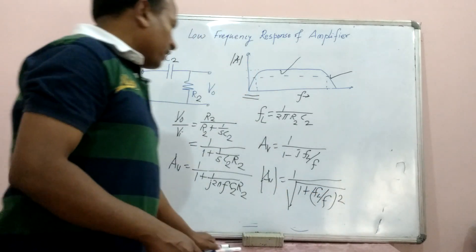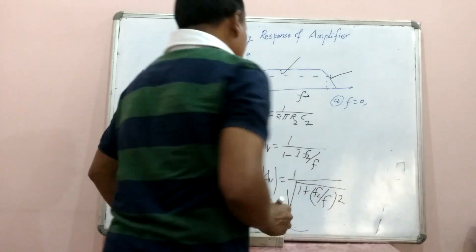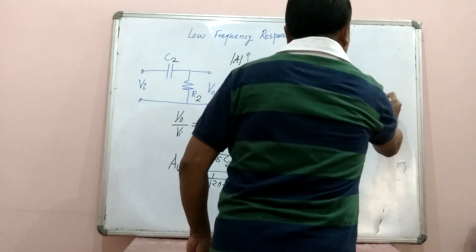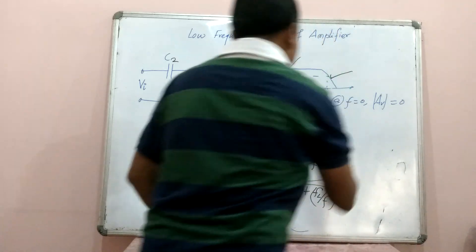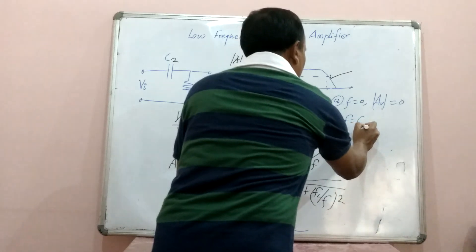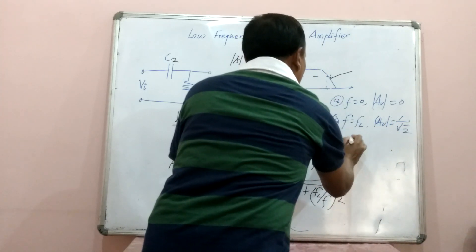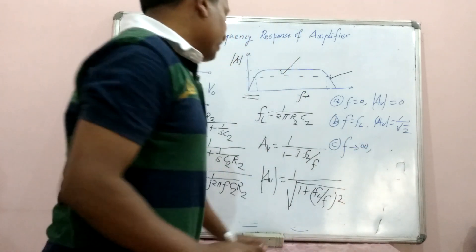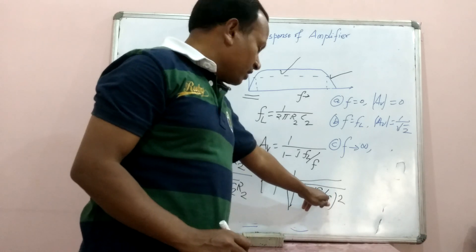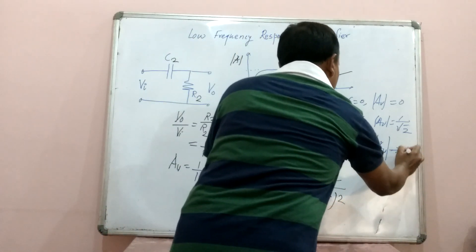Now let us find three different values. First case: when F equals 0, the denominator becomes infinite, so the magnitude of gain equals 0. Second case: when F equals FL, the magnitude of gain equals 1 upon root 2. Third case: when F tends to infinity, the FL/F term tends to 0, and therefore the magnitude of gain tends towards unity.